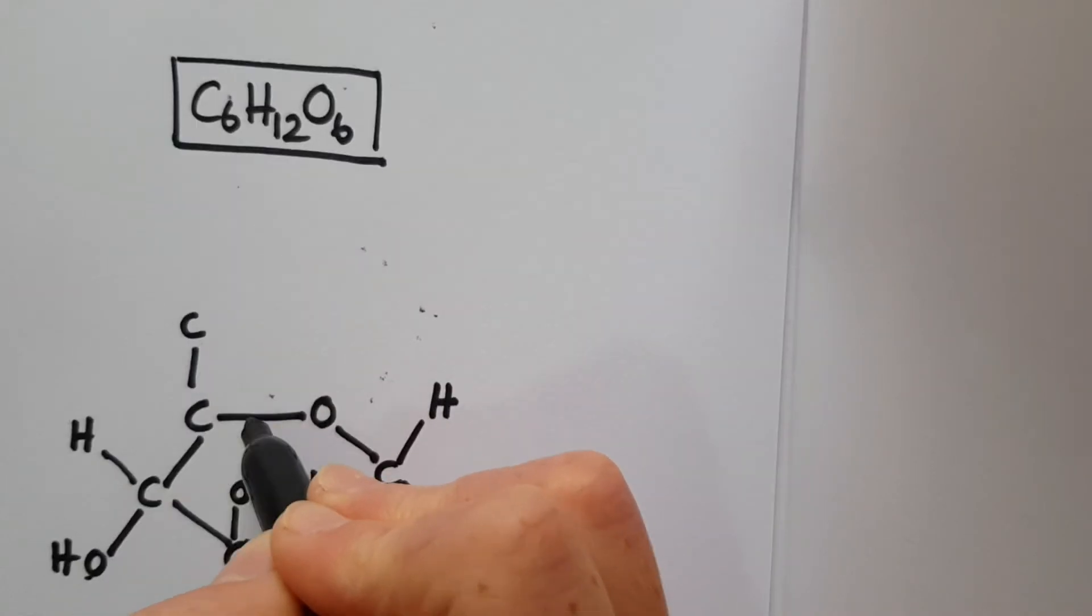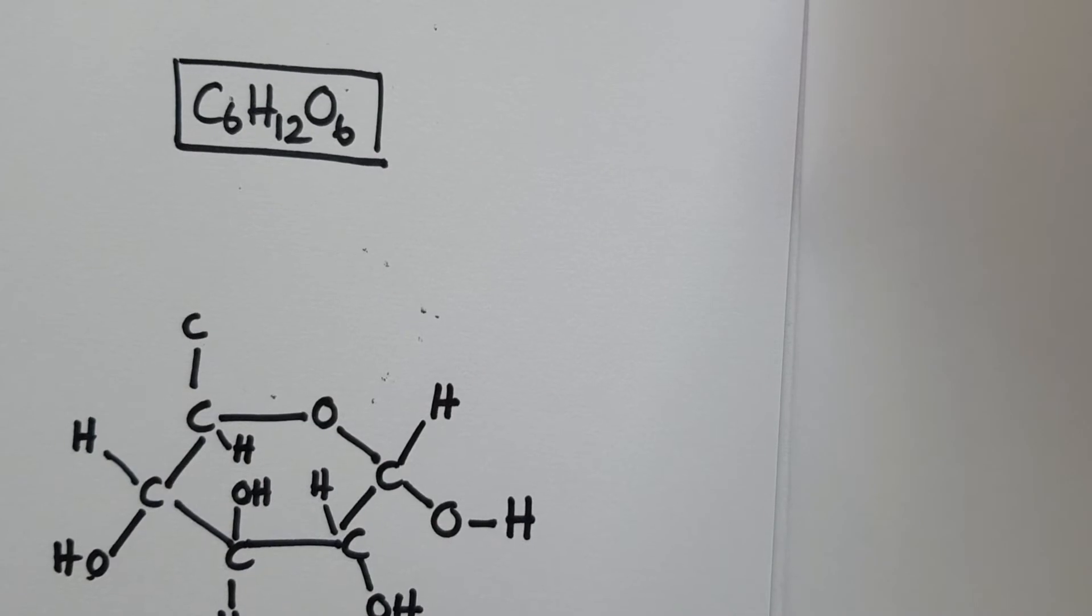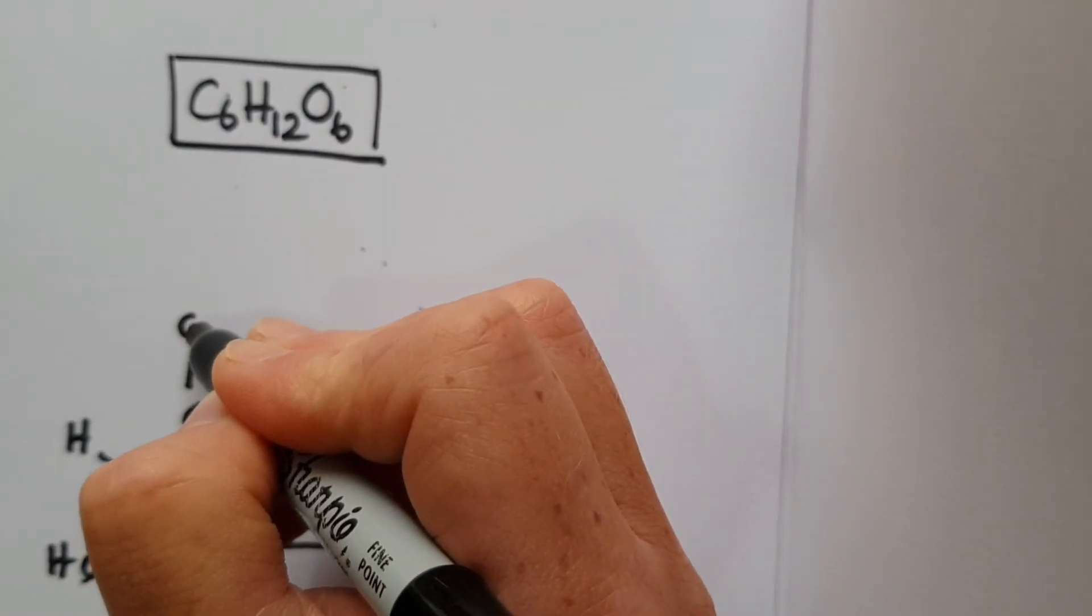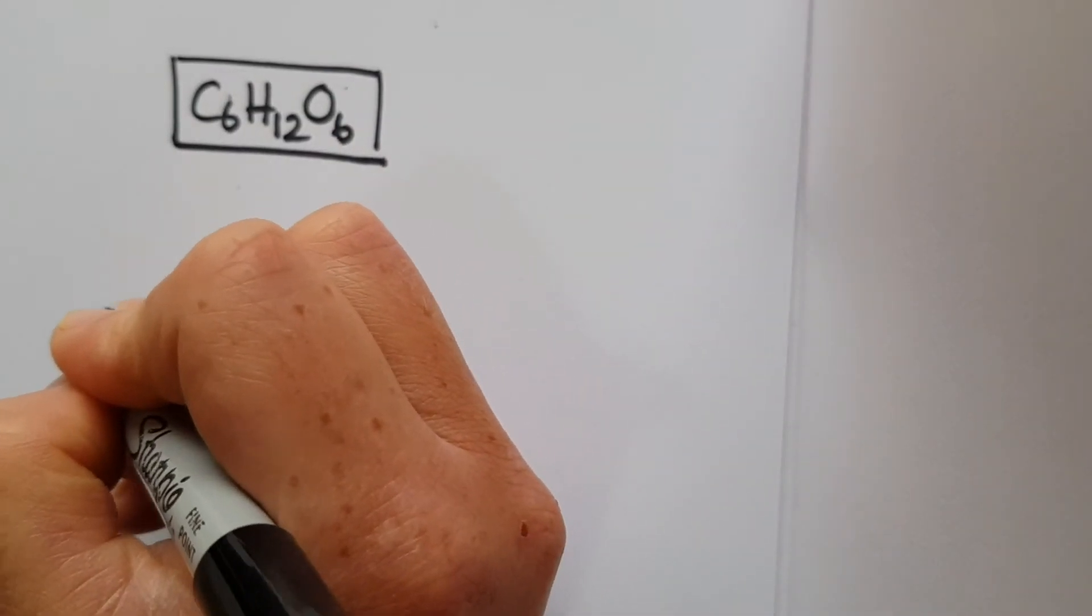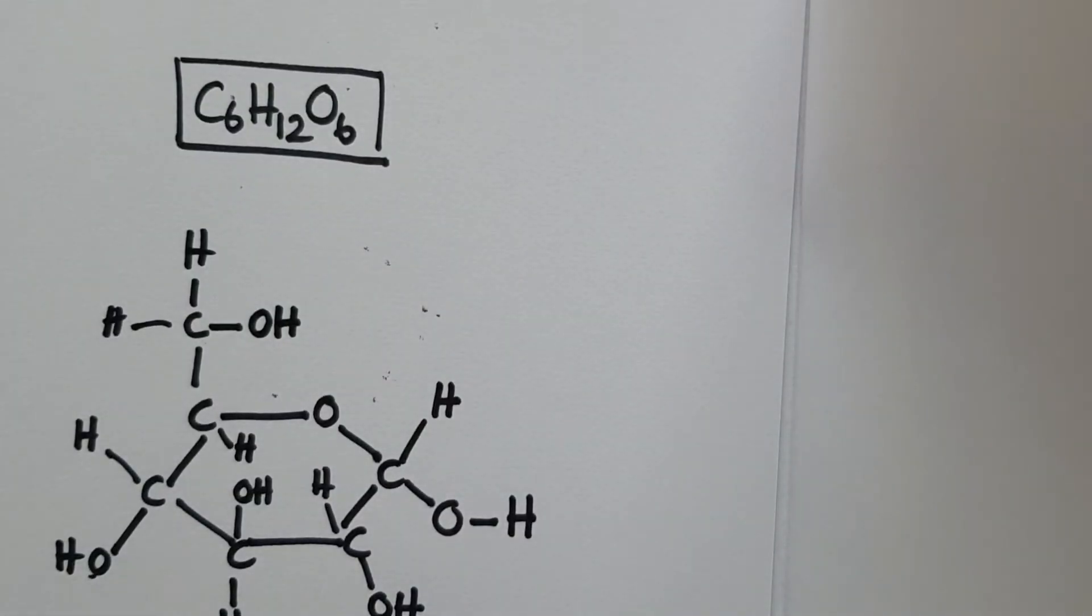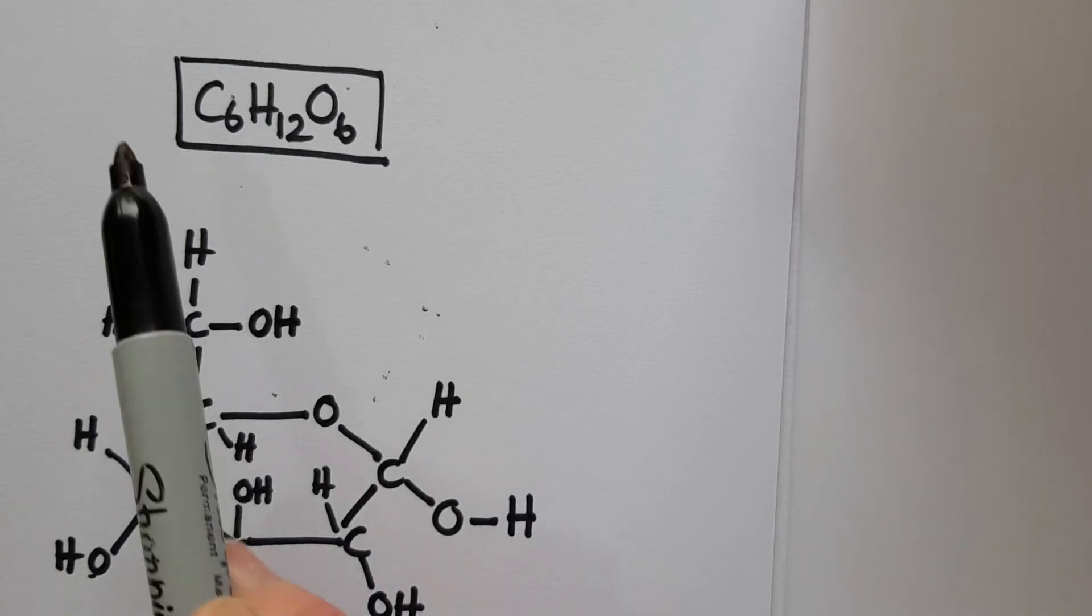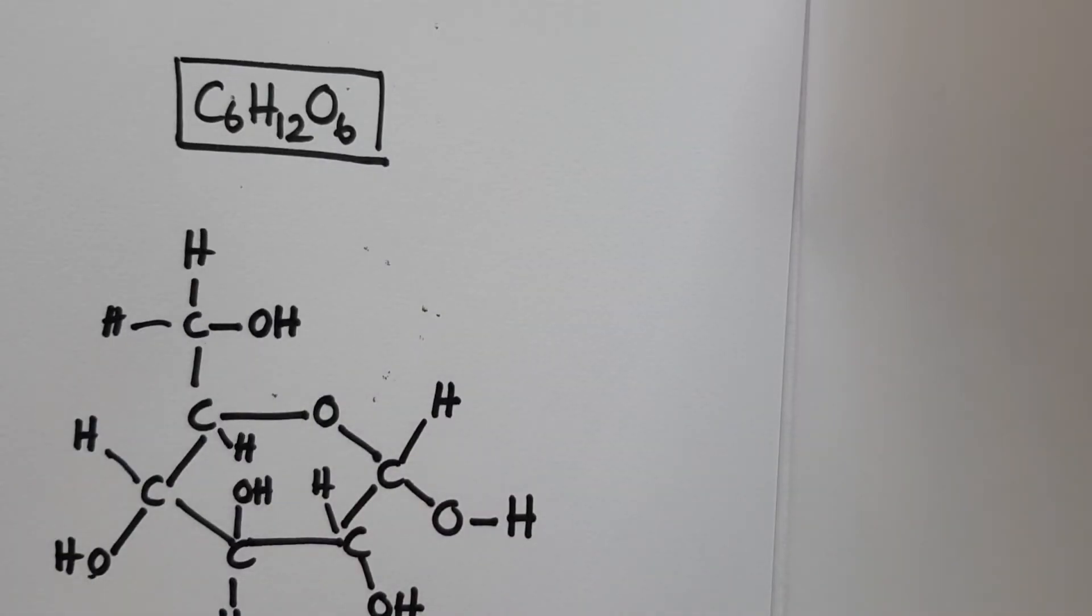Now, this carbon here only has three bonds at the moment. The fourth one is occupied with a hydrogen. And then our sixth carbon, the one that goes off the top of the ring, has a hydrogen, a hydrogen and a hydroxyl group. And if you were to go around and check now, you could check two things. Firstly, check that there's six carbons, which there are. Check that there's 12 hydrogen molecules, which there are. And check that there's six hydroxyl groups, again, which there are.